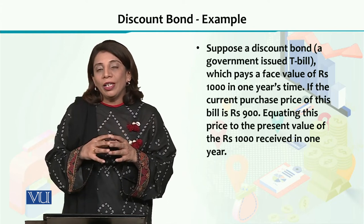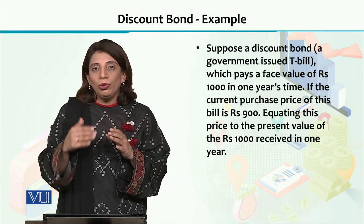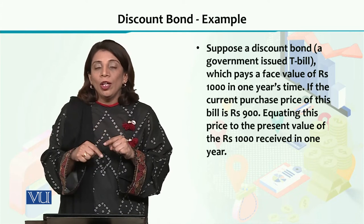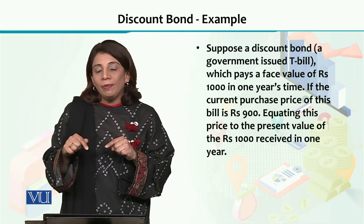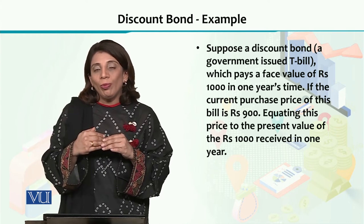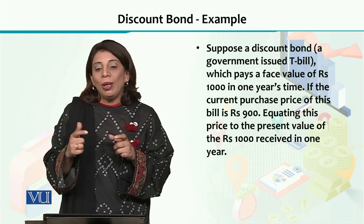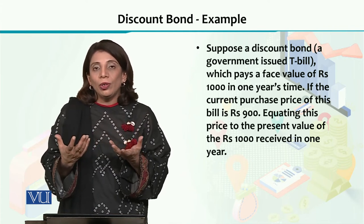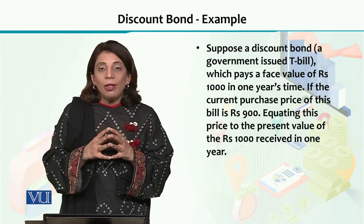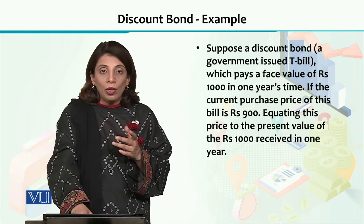State bank या central bank अगर चाहे तो T-bills issue कर देती है। T-bills में हम देख सकते हैं कि जो उसका face value है और जो उसका current market price है, उनमें फर्क रहता है — current market price कम होती है। ऐसी situation को हम discount bonds के form में consider कर सकते हैं। अगर current purchase price suppose 900 रुपे है और face value 1000 रुपे है...